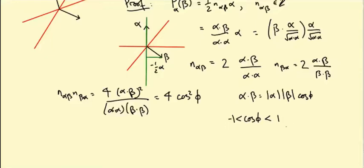If it's equal to 1 or -1, the mirrors are the same, and we're not interested in looking at the angle between a mirror and itself. We're interested in the angle between two different mirrors, so really, effectively, cos φ is strictly between -1 and 1.